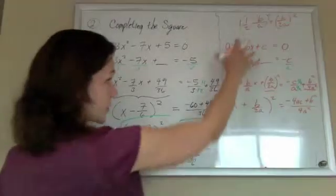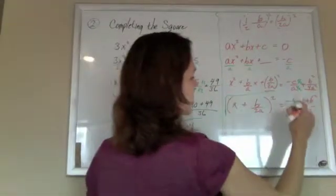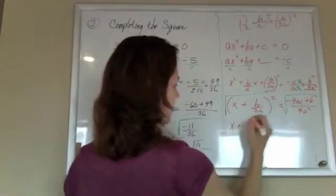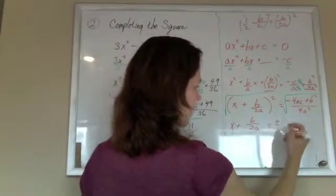And I've done all this work to get that perfect square, so that I can take the square root of both sides, and I get x plus b over 2a equals plus or minus.